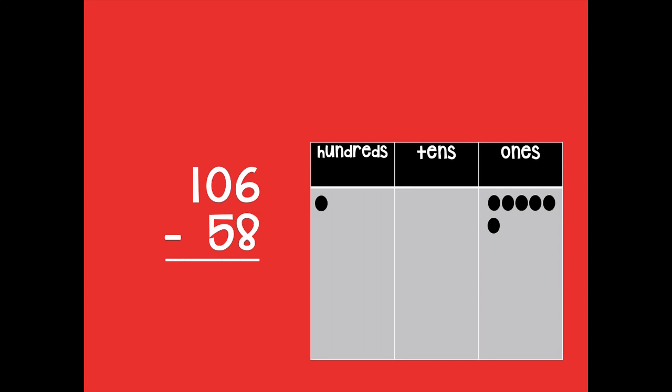So again, remember just like our previous lesson, we are taking this hundred and we are going to turn it into nine tens and 10 ones. We're doing that because if we look in our ones place and we try and subtract, we have 6 minus 8 and we can't do that.